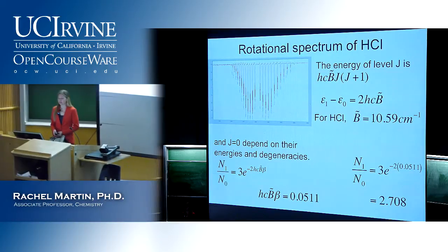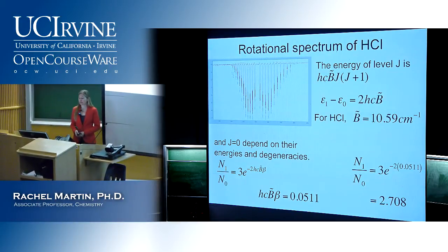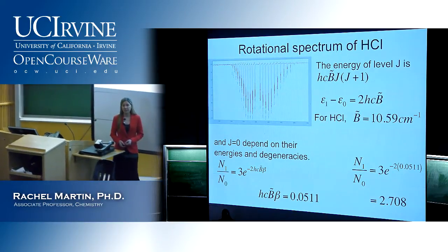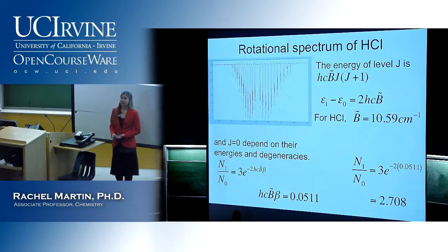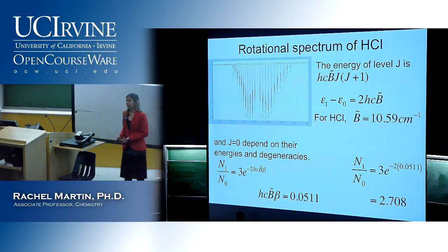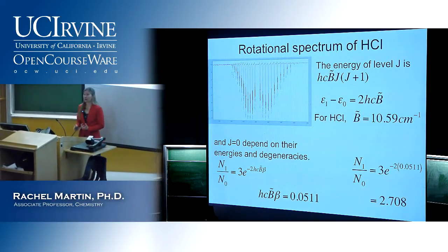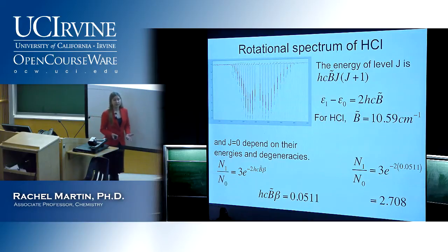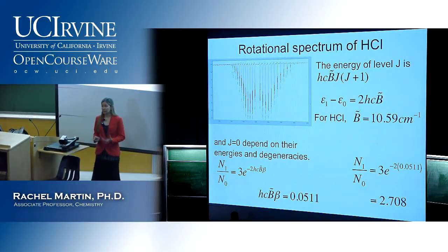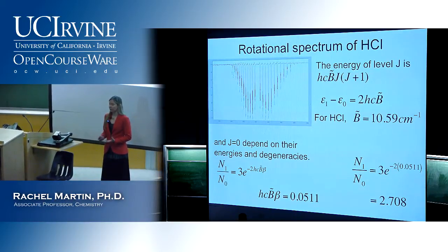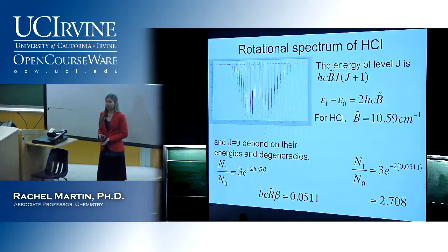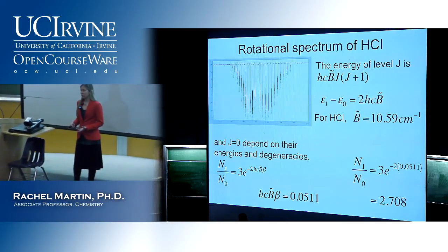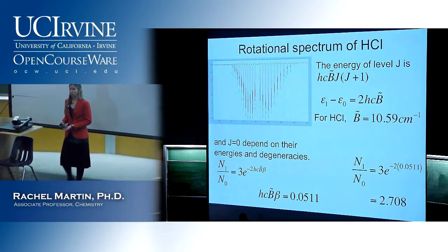We looked at the fact that this relative population just depends on the degeneracy of the states and the energy between them, and a parameter that's really fundamental to this is the temperature. The internal energy that's distributed tells us about which states are accessible, and the parameter that's really fundamental to that is temperature. In some ways, the really fundamental quantity is beta, 1 over kT.